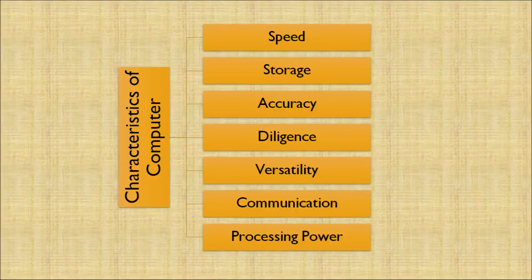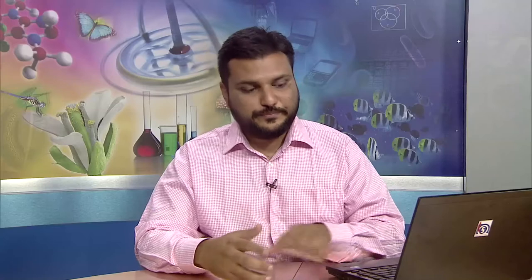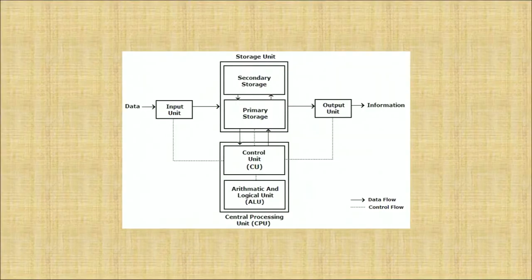Following are the characteristics of a computer. There are seven characteristics: number one, speed; second, storage; third, accuracy; fourth, diligence; fifth, versatility; sixth, communication; and seventh, processing power. When data goes into the input, it is processed through a CPU and we get an output, which is called information.